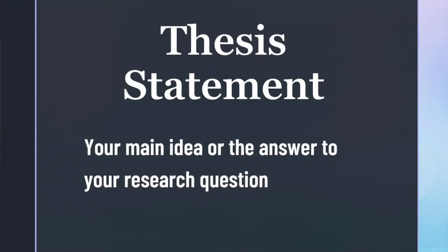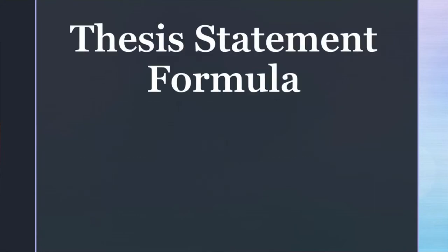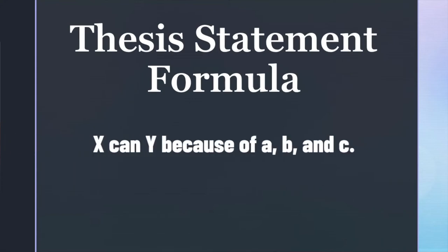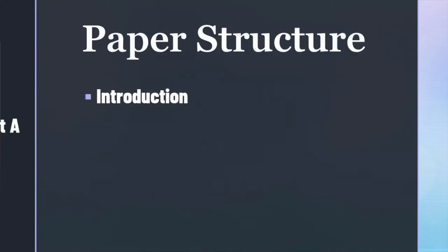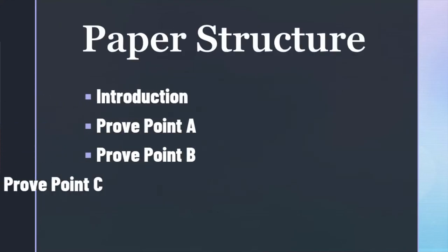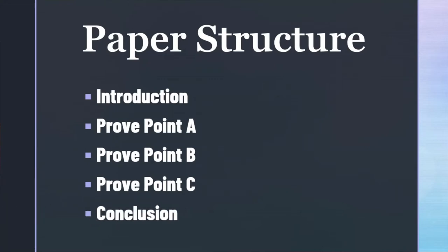Now your actual paper will be justifying your thesis. And because we started with a question, our justification will be the reasons we decided on our answer. One way to do it is to break down the specific points of your thesis. In the broad template of 'X can Y because of A, B, and C,' we might spend one paragraph each proving A, B, and C using our sources. It might take more than one paragraph to fully address a certain point, which is completely fine. This is just a general framing to help you structure your paper in a way that makes sense and ties back to your thesis.